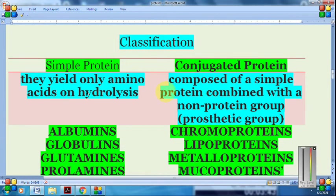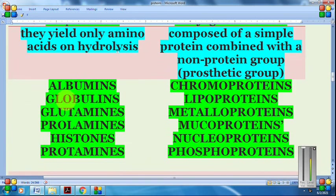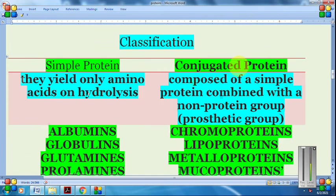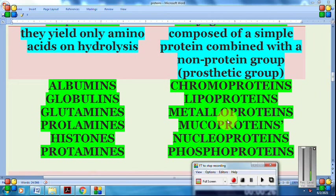Now if we talk about classification in general, proteins are broadly classified into two categories: simple proteins and conjugated proteins. Simple proteins yield only amino acids on hydrolysis. Conjugated proteins are composed of a simple protein combined with a non-protein group known as the prosthetic group. Examples of simple proteins include albumins, globulins, glutenins, prolamines, histones, and protamines. Examples of conjugated proteins include chromoproteins, lipoproteins, metalloproteins, mucoproteins, nucleoproteins, and phosphoproteins.